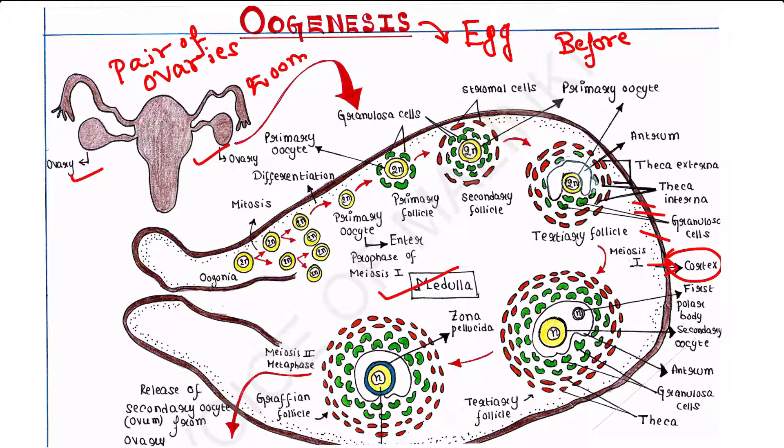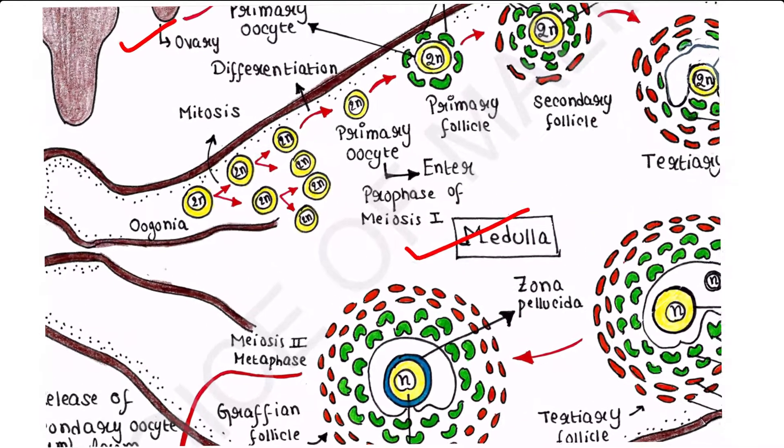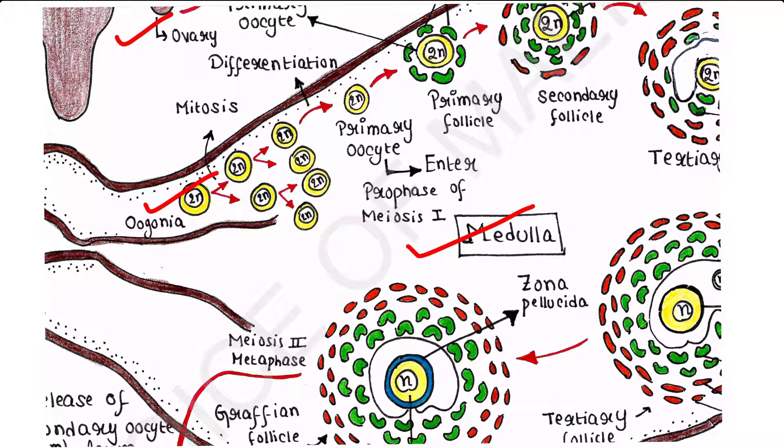Basically, oogenesis begins in females before they are even born. During early fetal development, oogenesis begins with female germ cells. Female germ cells are oogonia. Oogenesis begins with oogonia that contains diploid 2n number of chromosomes. Oogonia are basically stem cells. They undergo mitosis to increase in numbers, so a number of oogonia are now produced. They ensure a constant supply of oogonia to run oogenesis.